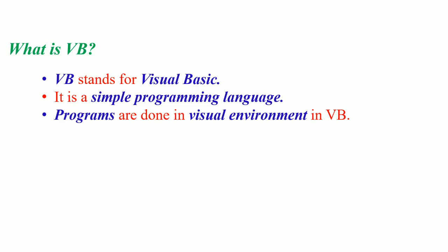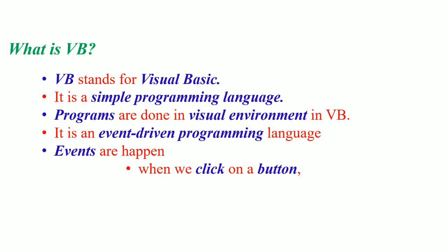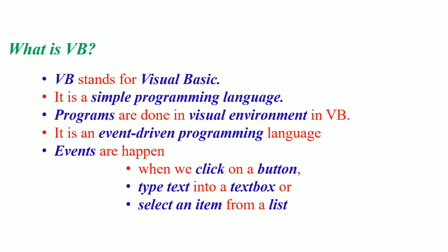In VB, we use a term called IDE. Programs are done in a visual environment. VB is an event-driven programming language. An event means any happening — each and every happening. In VB, events can happen in three ways: when we click on a button, type a text into a text box, or select an item from a list. These are the three types of events that can take place in VB.